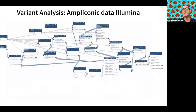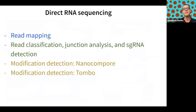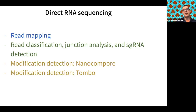There are workflows for ampliconic analysis from Illumina data and ampliconic analysis from Oxford Nanopore data. We're trying to develop workflows that work on primary Oxford Nanopore data — not on FASTQ files, but actual FAST5 files, which contain much more information. For direct RNA sequencing, there are workflows developed by the Freiburg group including read mapping, read classification, and junction analysis. SARS-CoV-2 has a genome, positive and negative strands appearing during replication, and subgenomic RNAs.